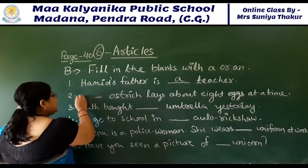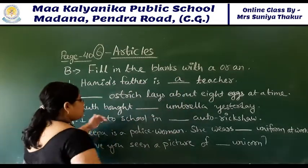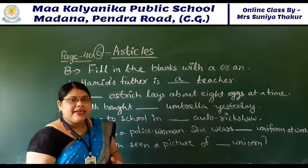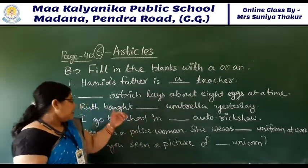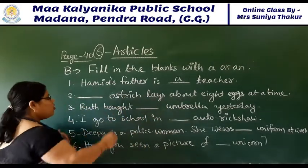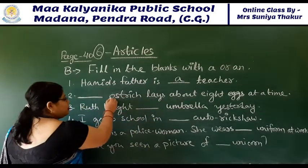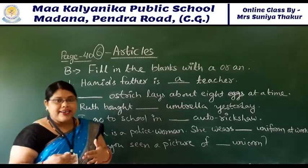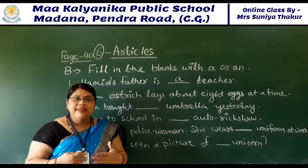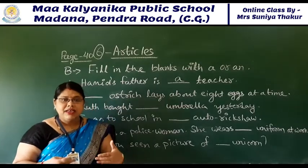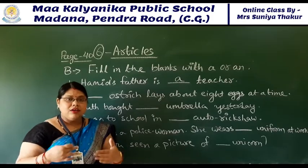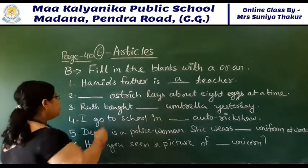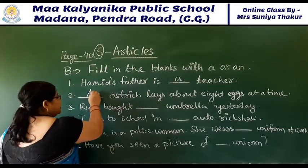This 'ostrich' - look at this. O is your vowel and 'ostrich'. But listen - ostrich: the sound coming is 'O'. So what will come here? AN - an ostrich.